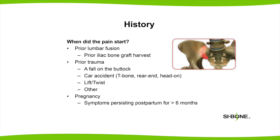In the history, there are usually three common findings consistent with SI joint disease. One, a history of previous back surgery, especially lumbar fusion. Two, trauma, such as a slip and fall onto the buttock. Or three, pregnancy with persistent pain that has continued after delivery.